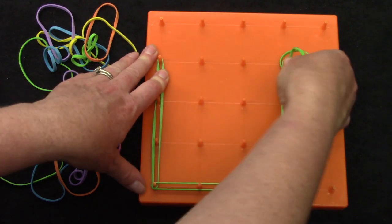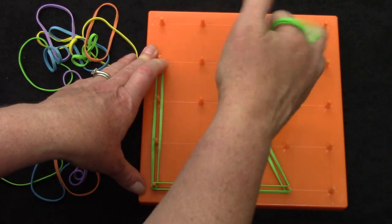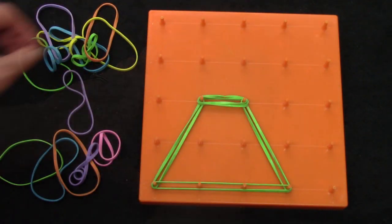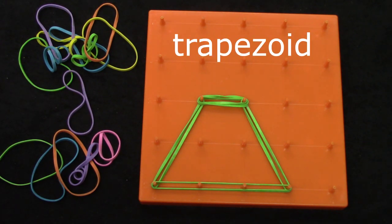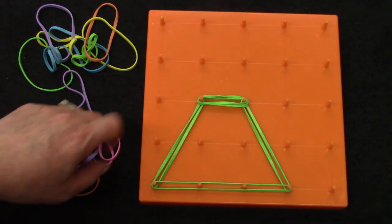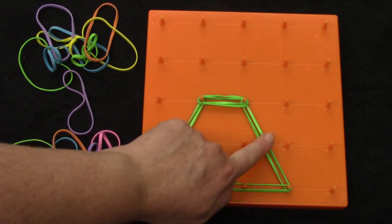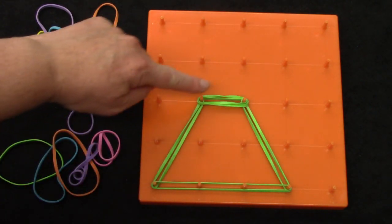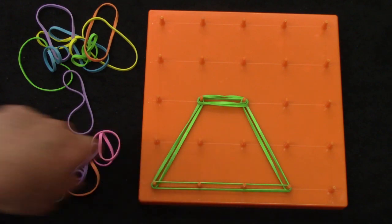I'm going to try to make another four-sided shape. Do you know what this four-sided shape is called? It's a trapezoid. It has four sides, one, two, three, four, and four angles, one, two, three, four.